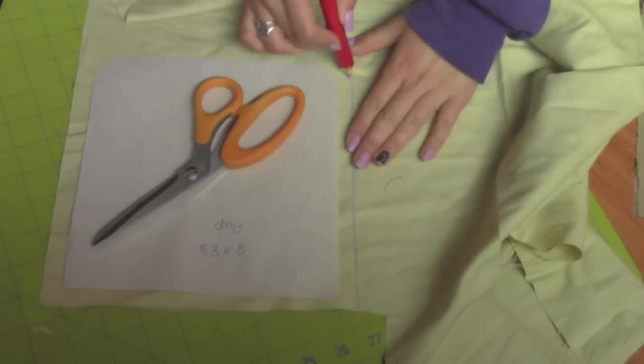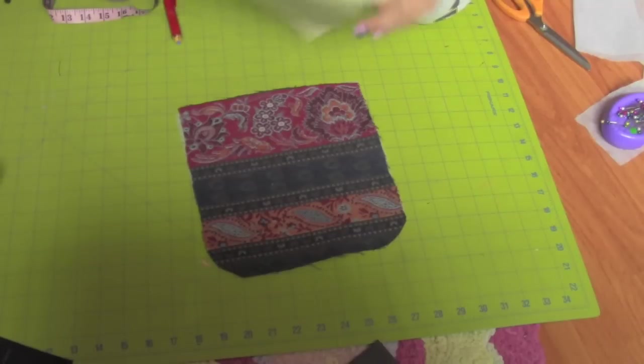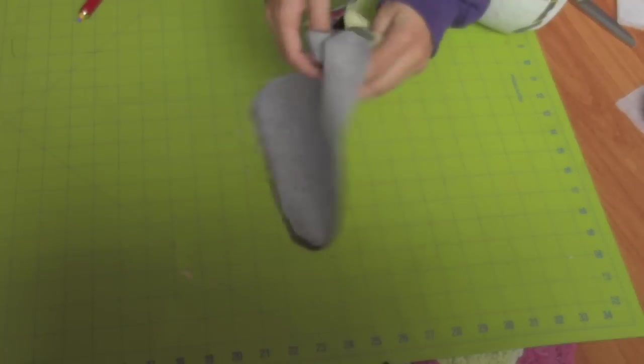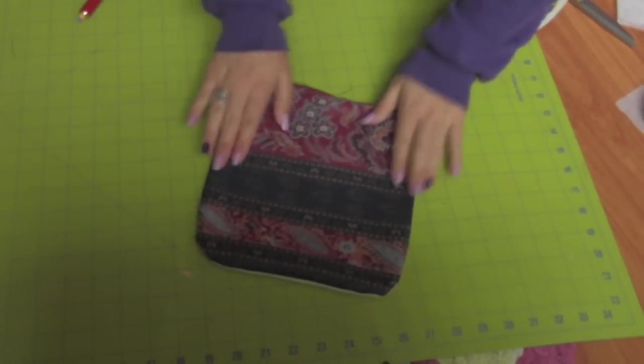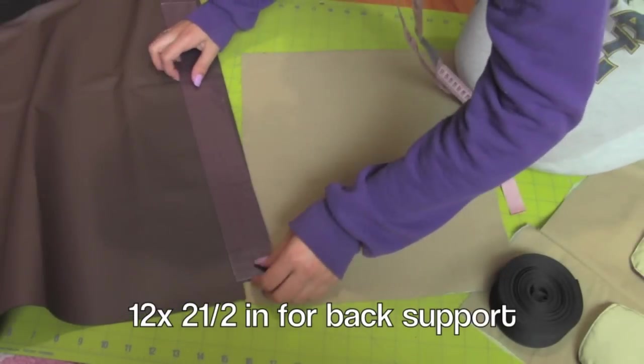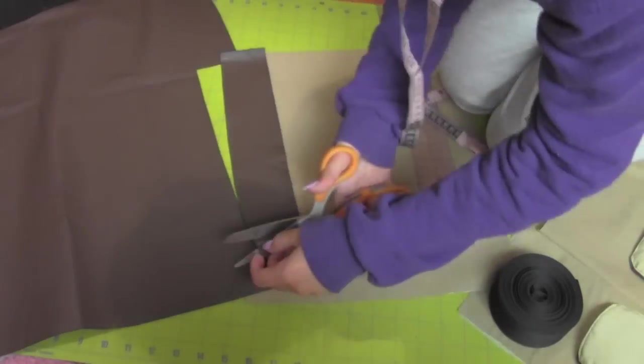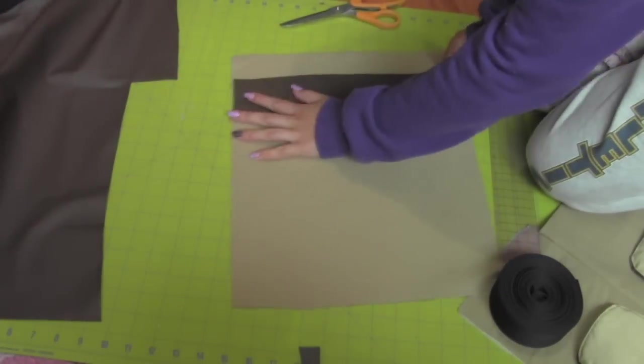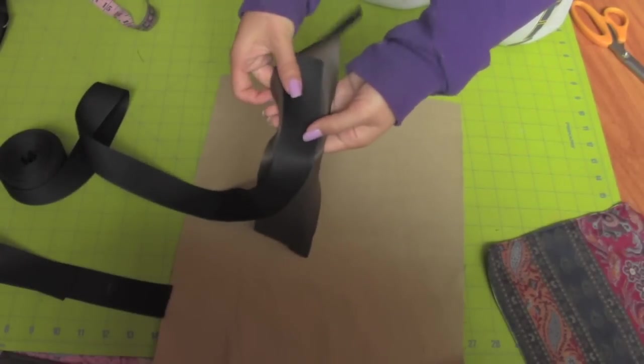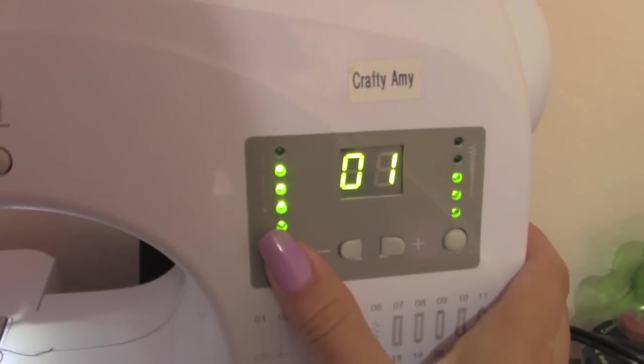Now I'm tracing and cutting the backpack flap, leaving half an inch for seam allowance. Cut a 12 by 2.5 inch strip of vinyl to support the back of the backpack. Sew a seam on both sides using a wide stitch length.